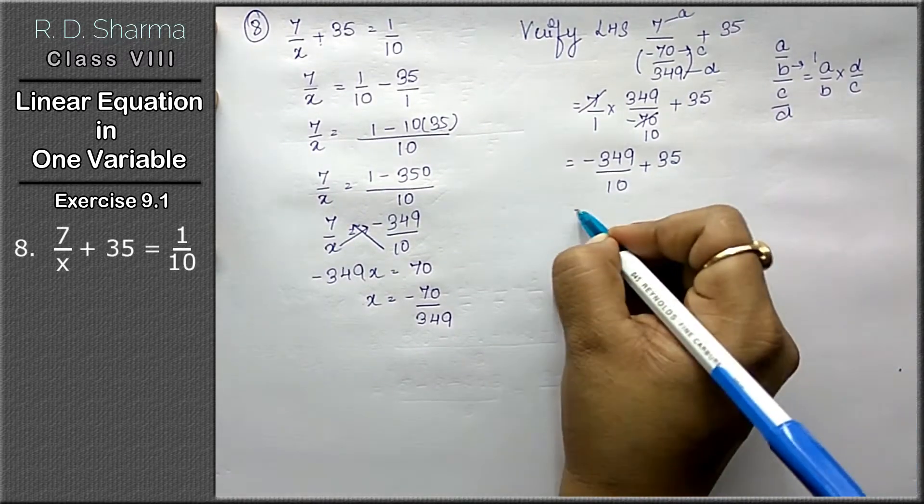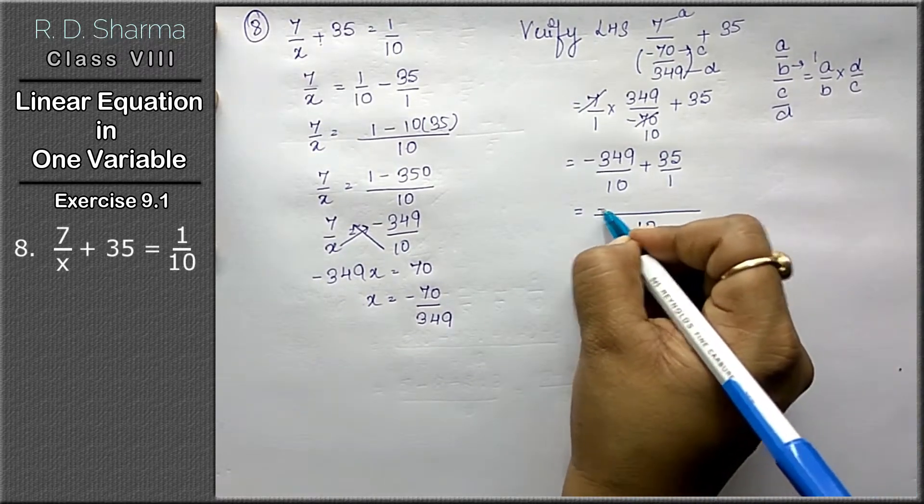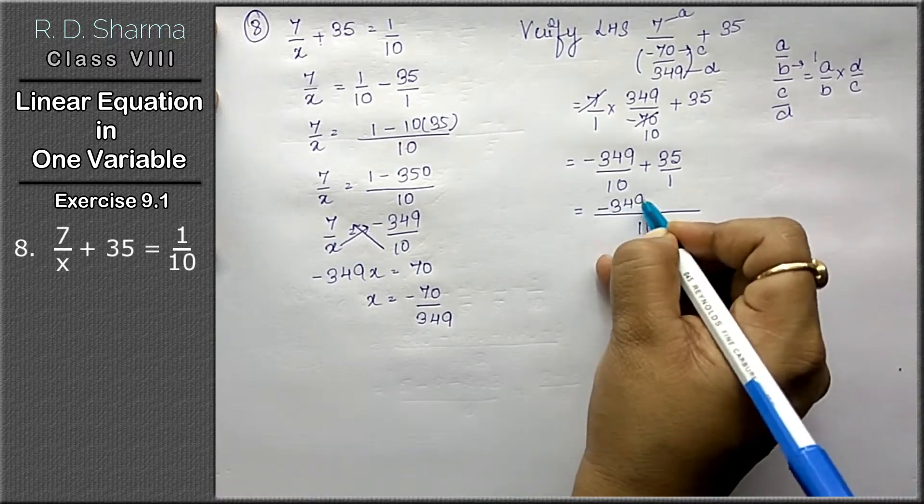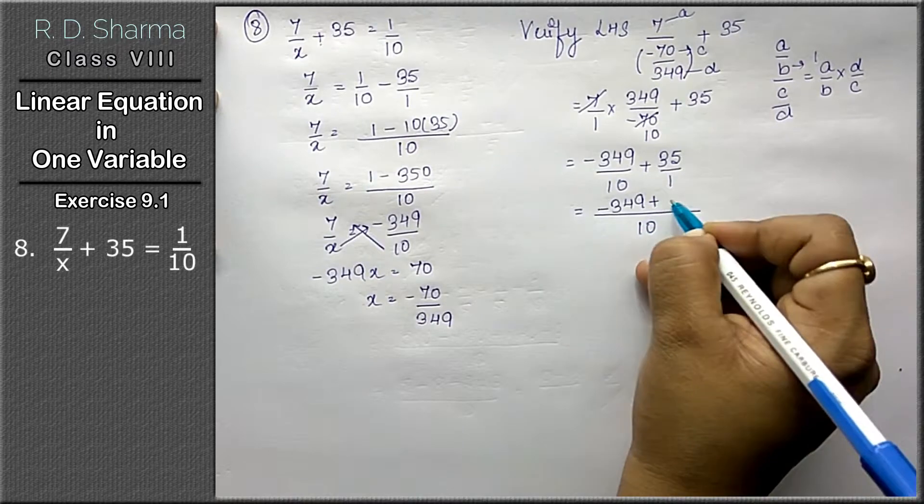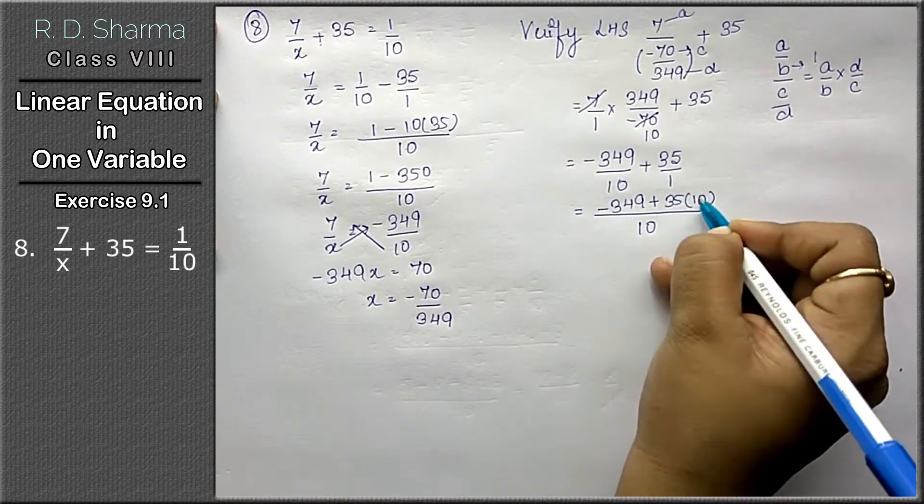Now we will take the LCM. 10, kuch nahi likha, 1 likhenge. Minus 349 as it is plus 35 into 10 because 1 10s are 10.